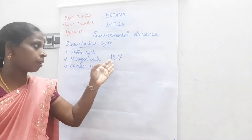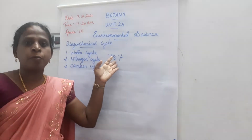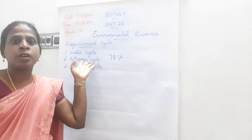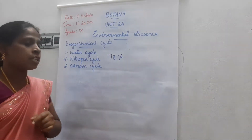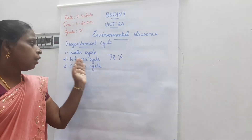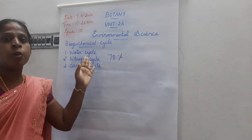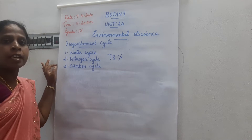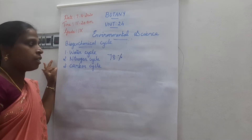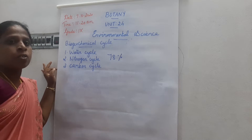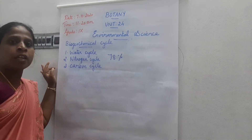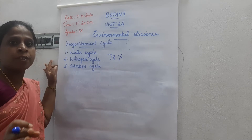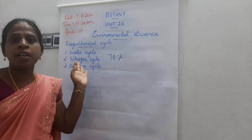78% of nitrogen is present in the atmosphere. It is an essential component of protein, nucleic acid, and chlorophyll. Nitrogen is very important for all living organisms, and plants take nitrogen for their growth.